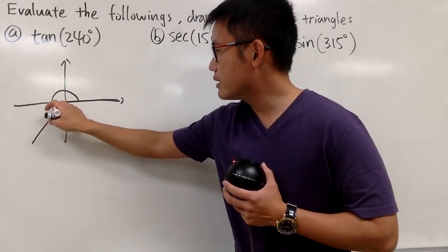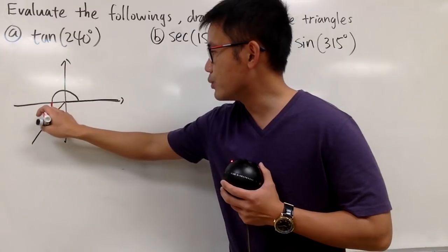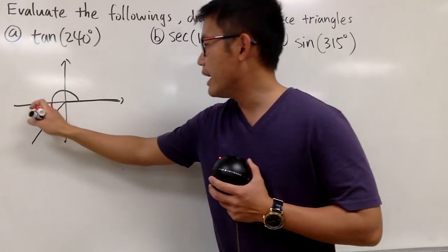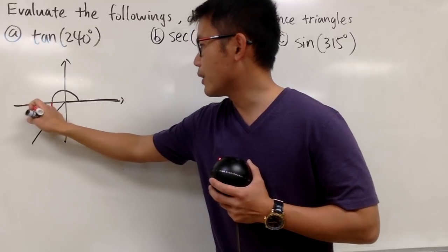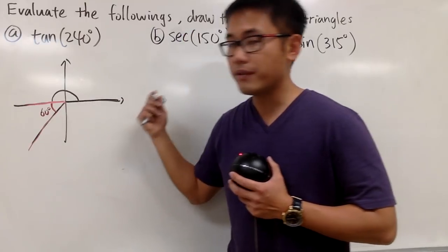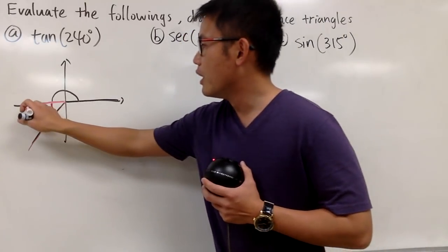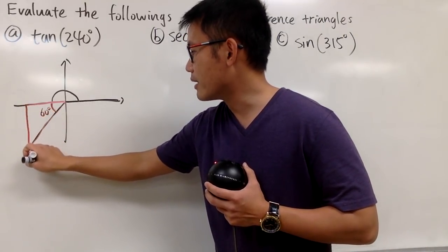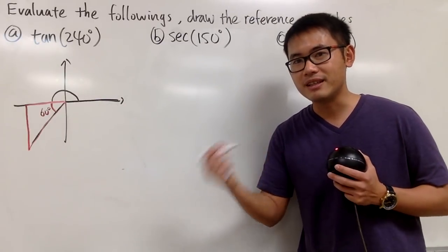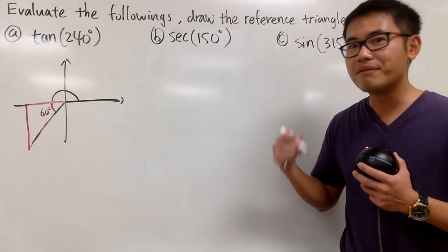And once again we mentioned it, this right here is 60 degrees. And in fact, this is the reference angle. And we can just put in our special right triangle right here. And when we are doing this kind of things without our calculator, all of these questions will be done with special right triangles. Either 30-60-90 or 45-45-90.